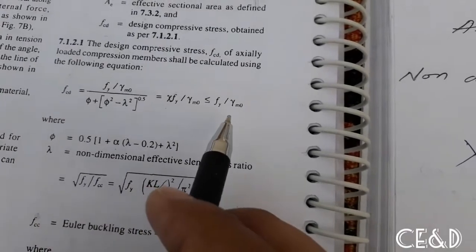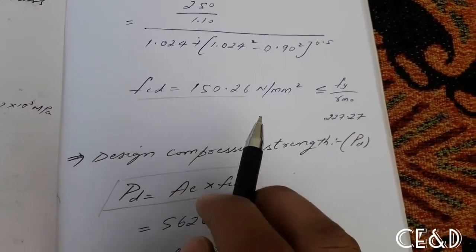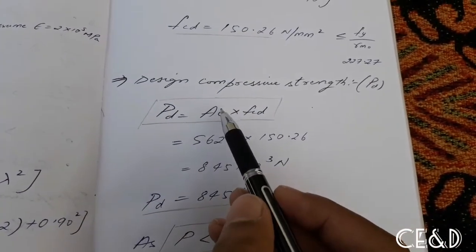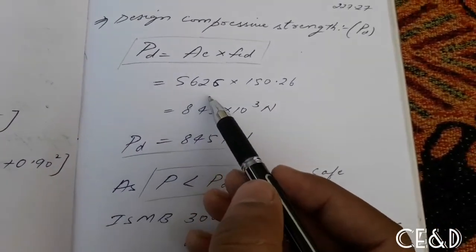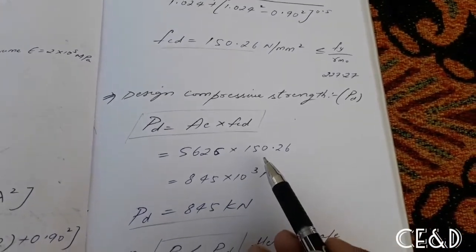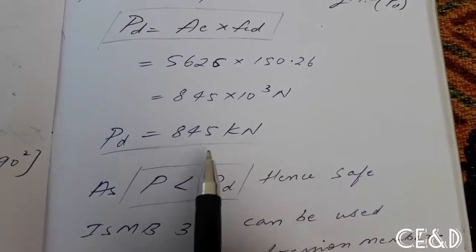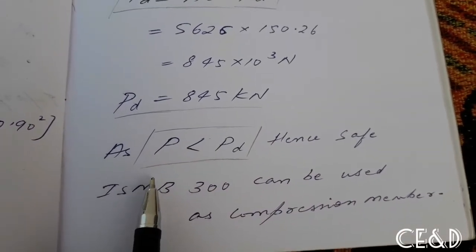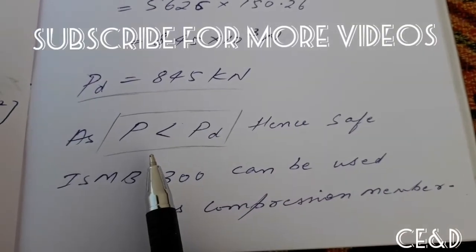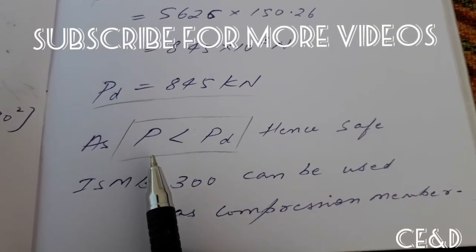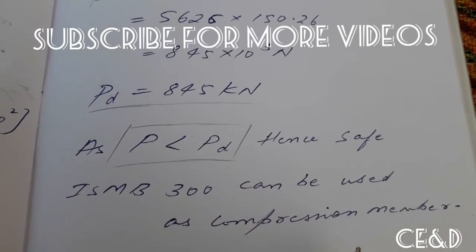Check: FCD = 150.26 N/mm² shall be less than FY/gamma_M0 = 250/1.10 = 227.27 N/mm². Safe. Now find design compressive strength PD = AE × FCD = 5626 × 150.26 = 845 kN. Final safety check: applied load P = 600 kN < PD = 845 kN. Hence safe. ISMB 300 can be used as the compression member.